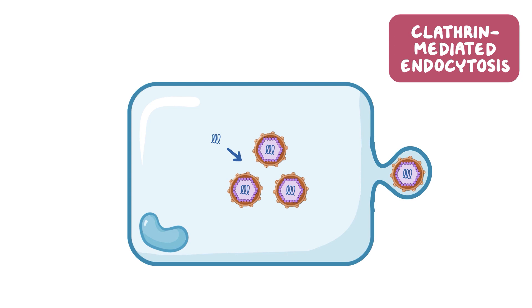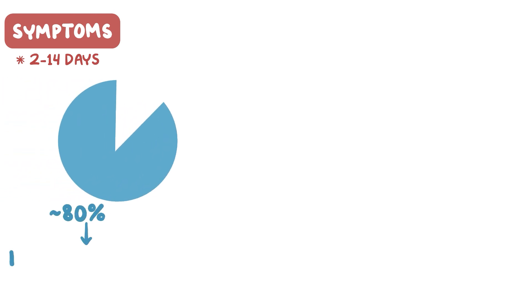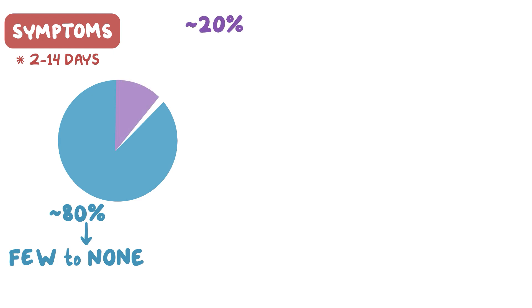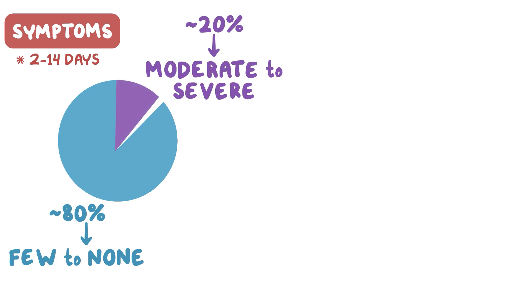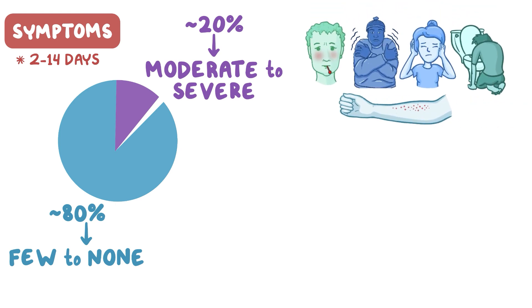After people are infected with West Nile virus, it takes 2–14 days to develop symptoms. Most people infected with the virus, about 80%, have few to no symptoms at all. About 20% of people develop moderate to severe symptoms. Moderate symptoms include fever, chills, headache, vomiting, or a rash.